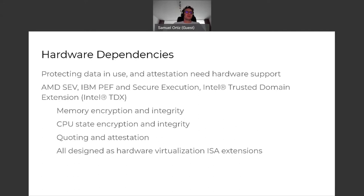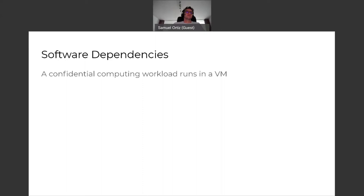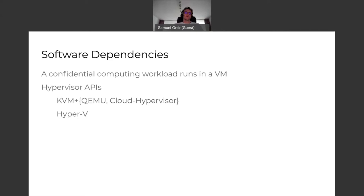The interesting part is that they're all designed as hardware virtualization extensions, which means if you want to do confidential computing — as a tenant or workload — you're going to have to run inside a virtual machine. That brings software dependencies: you'll have to indirectly talk to a hypervisor such as KVM/QEMU, Cloud Hypervisor, or any hypervisor that supports these confidential computing technologies.